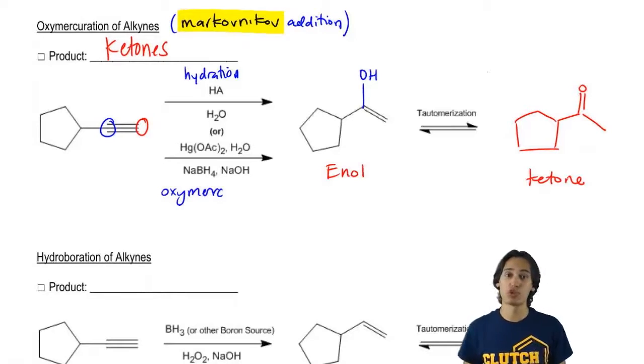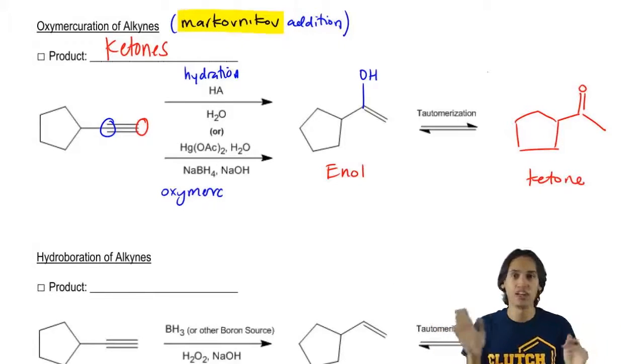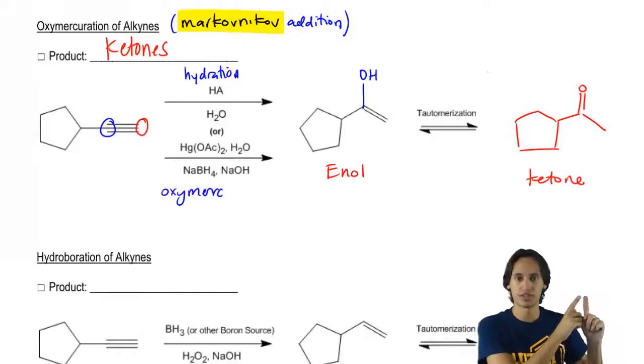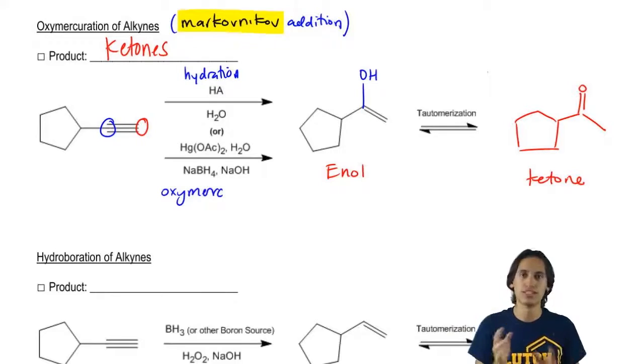Now what part of this mechanism should you be able to draw? The first part. The second part, you are fine just to say tautomerization. Just label it and then draw the product. Like I said, I'm not going to teach you that full mechanism until we get to Orgo 2. But for right now, you know at least the general idea of what's going on.